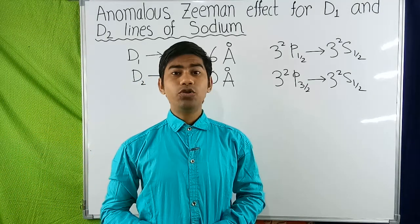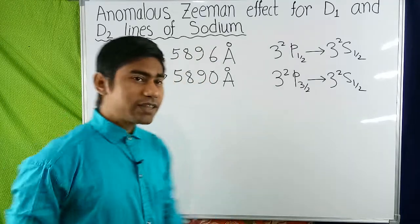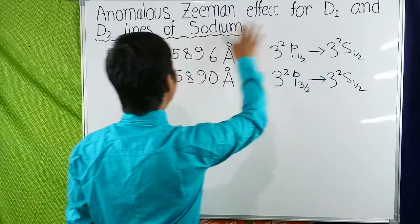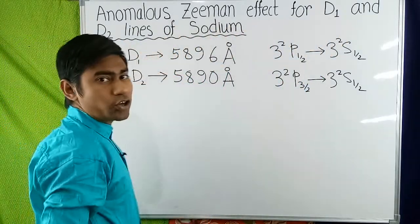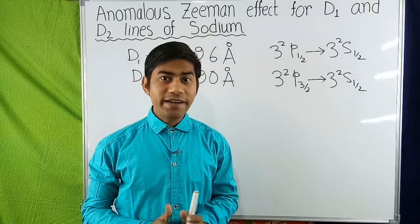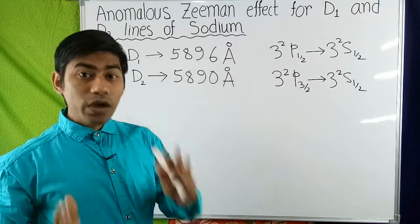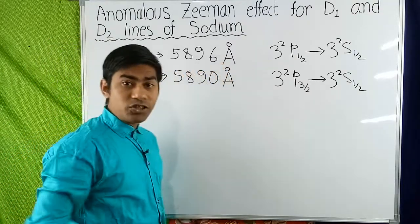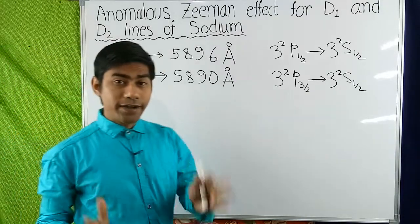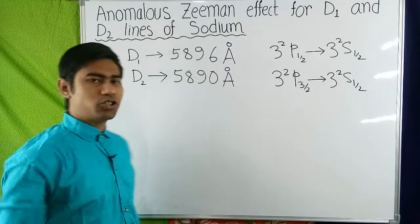Hello everyone, welcome to this lecture. I am Amrond Das. Today I will discuss about the anomalous Zeeman effect for D1 and D2 lines of sodium. We know that the D1 line of sodium atom has wavelength 5896 angstrom and the D2 line of sodium atom has wavelength 5890 angstrom.